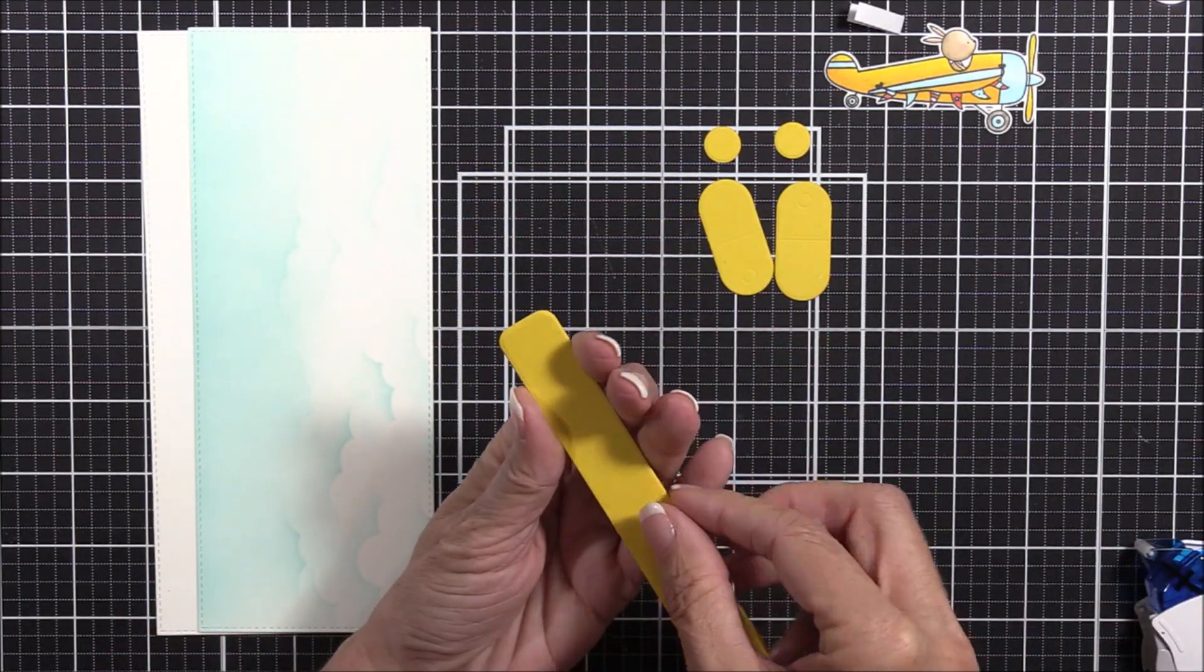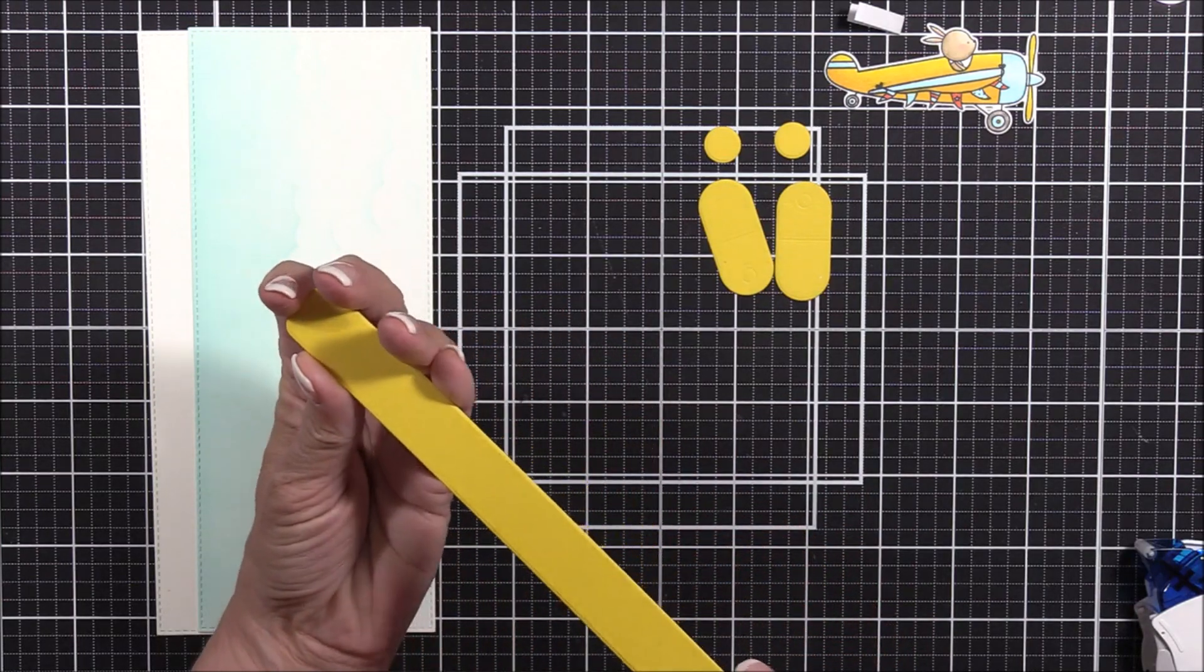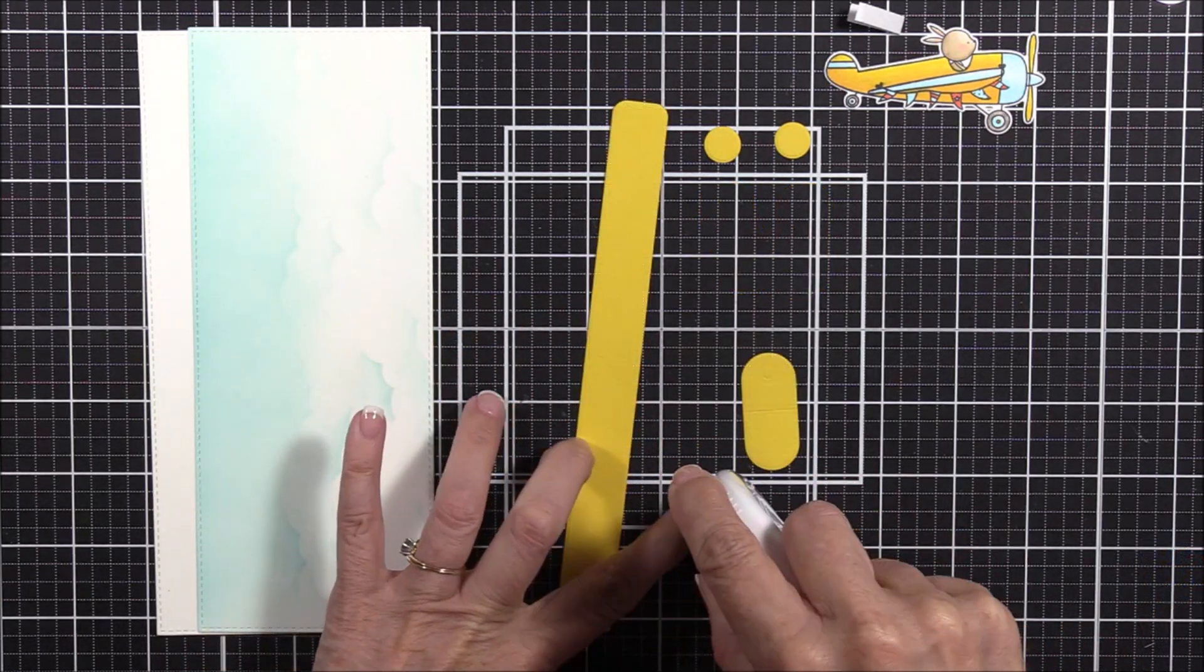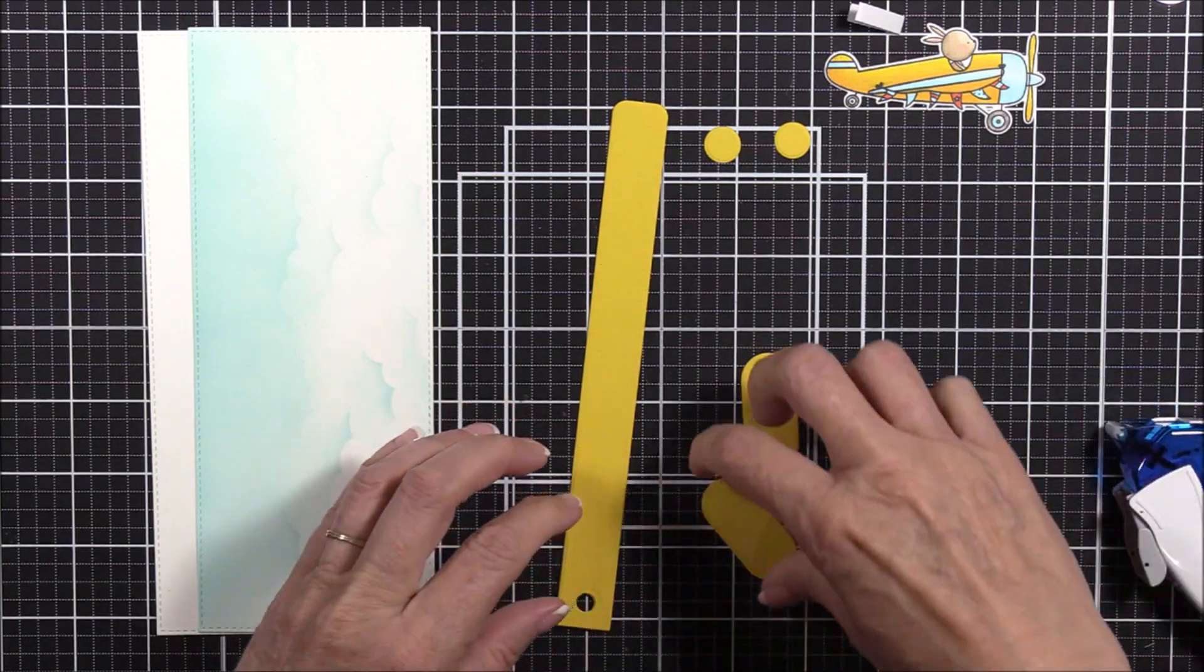I'll adhere the two pull tabs and the tabs together with my tape runner. This will ensure that these interactive components will be sturdy enough for our card.